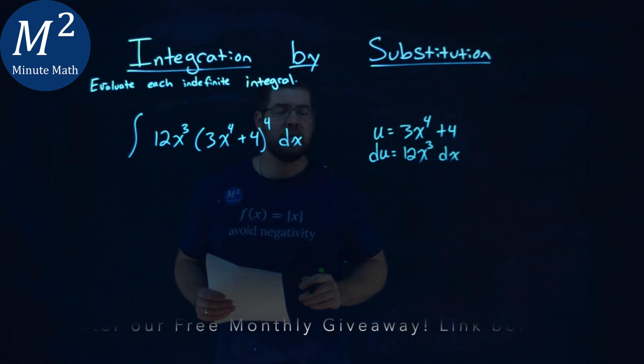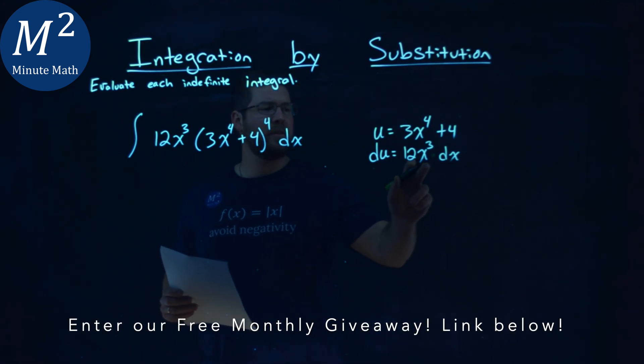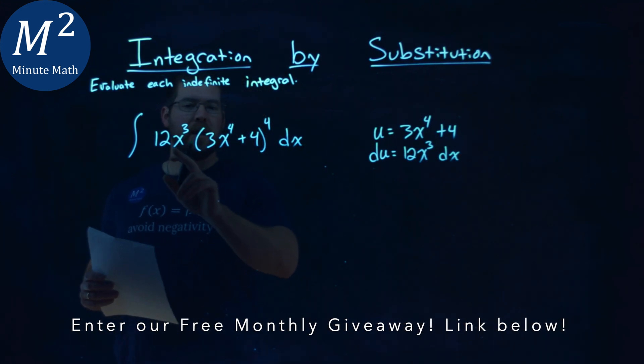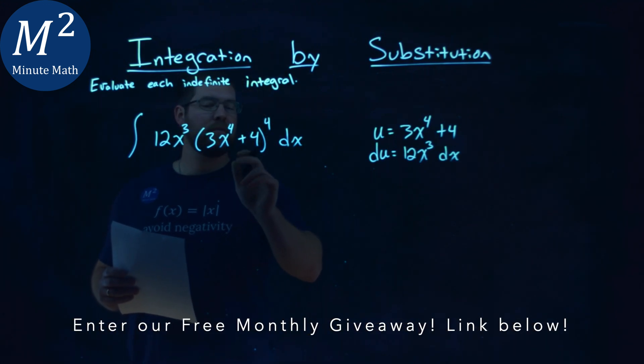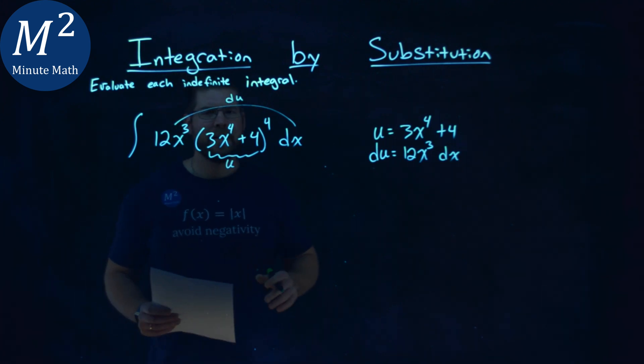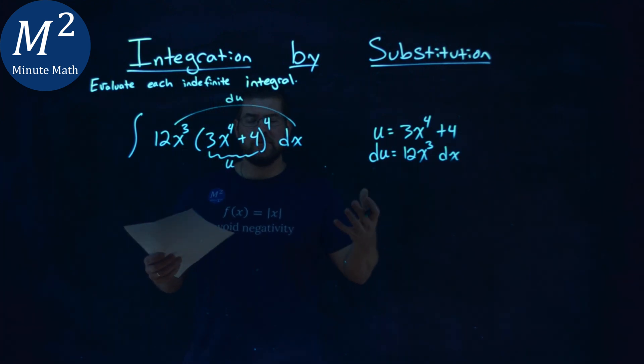And this actually works out in our favor. Notice, we have 12x³ dx right here, and we have u right here, 3x⁴ + 4. So if these two parts here are my du, and this inside part is my u value, it's pretty easy now to substitute that in.